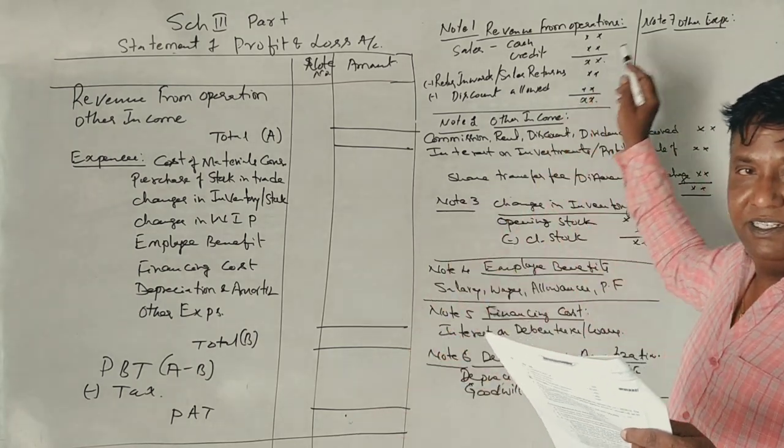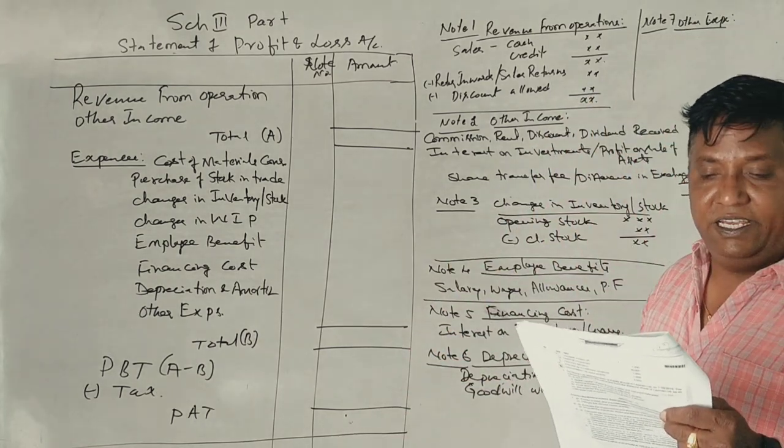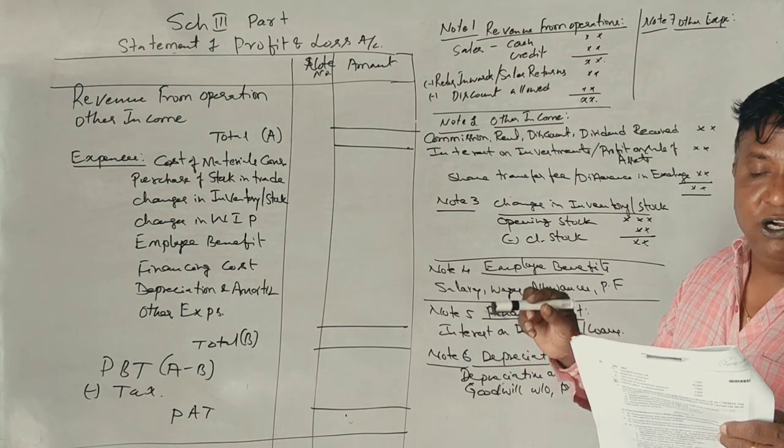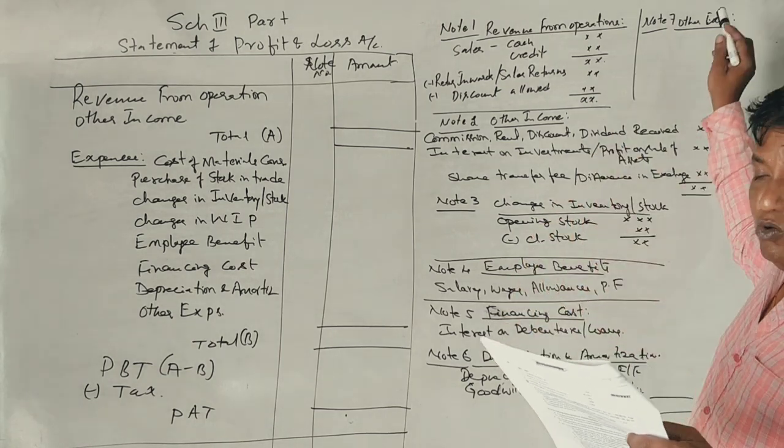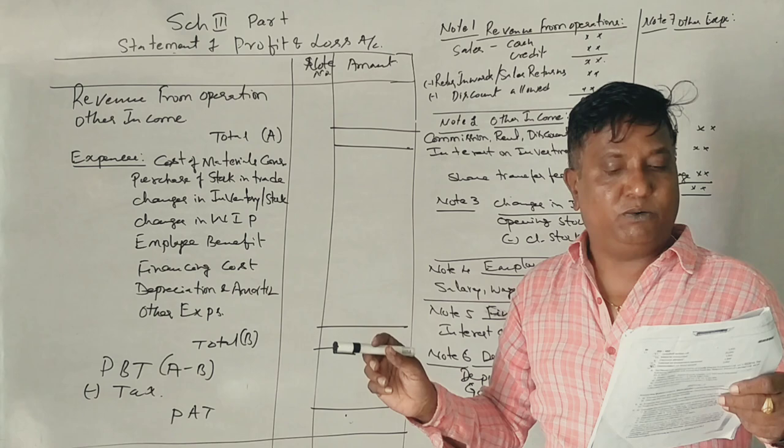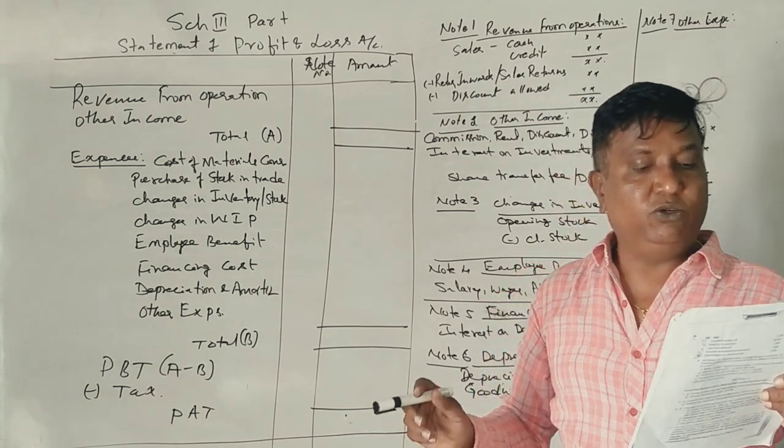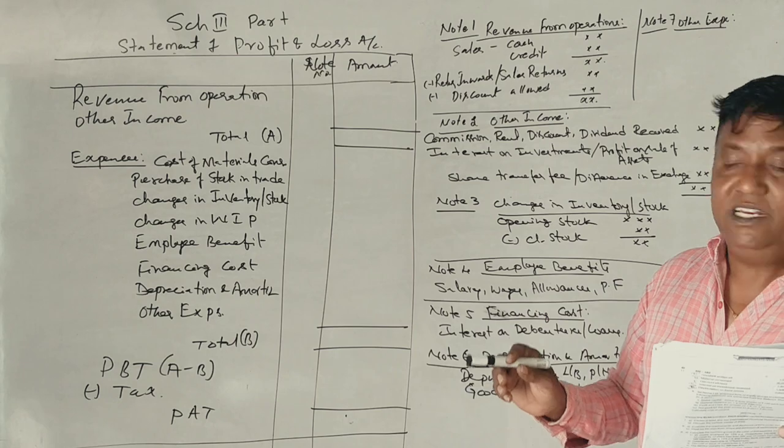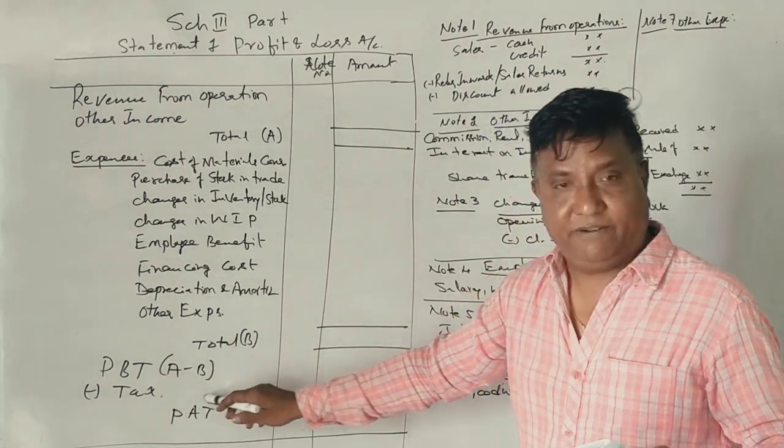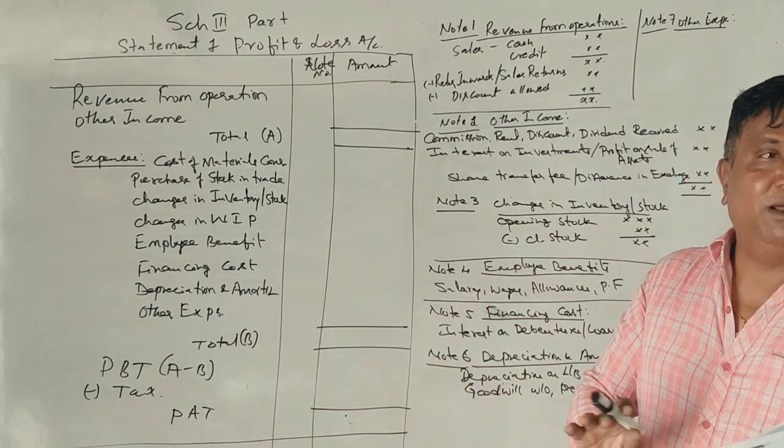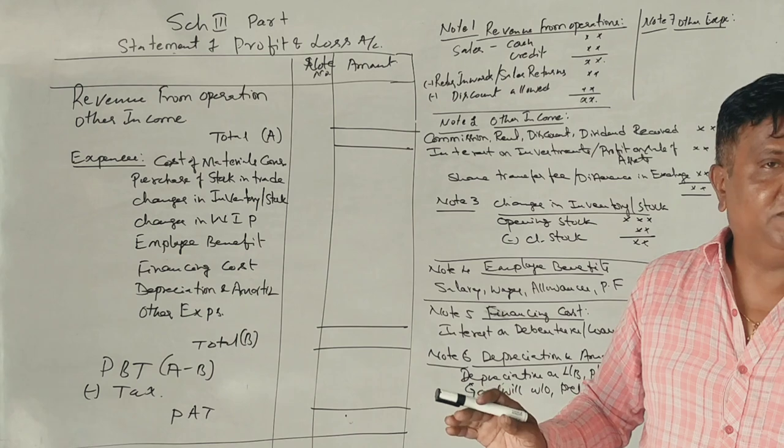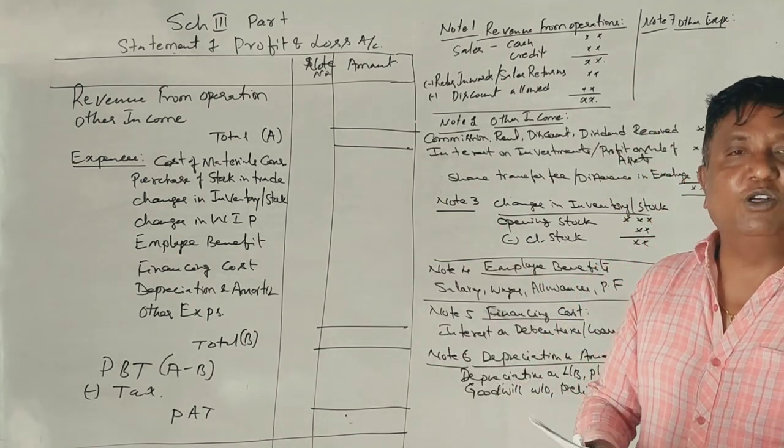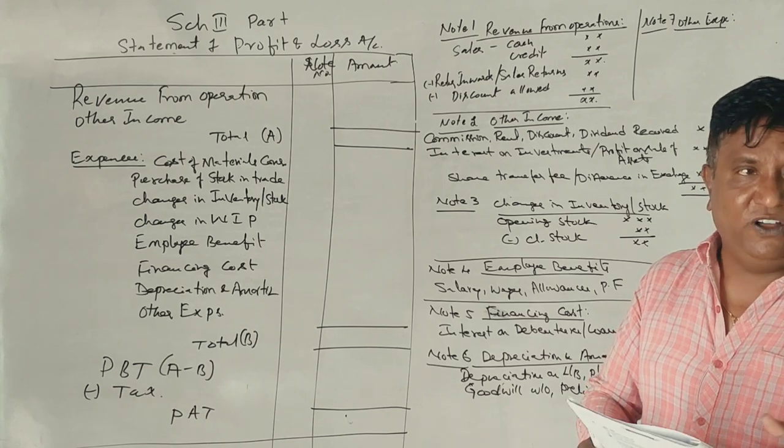Office expenses are other expenses. Printing and Stationery are other expenses. Carriage outwards and freight are other expenses. Advertisement goes under other expenses. Income tax, 40%. That's the question. This is correct. Pro-Forma is a good thing. You can explain the Pro-Forma.